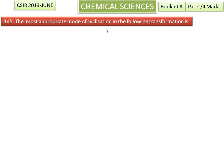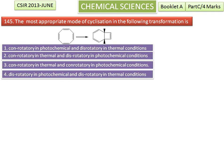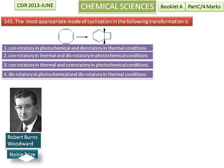The most appropriate mode of cyclization in the following transformation is shown here. Woodward was an American organic chemist, considered by many to be the preeminent organic chemist of the 20th century. He was awarded the Nobel Prize in Chemistry in 1965.